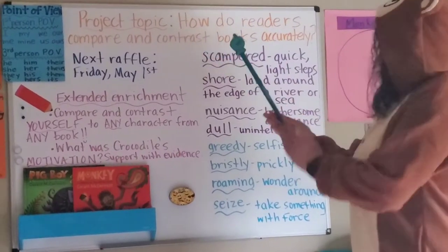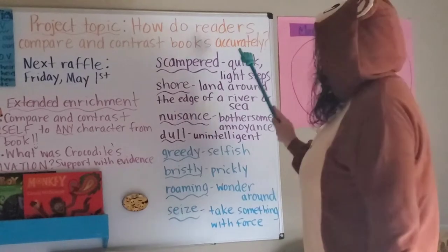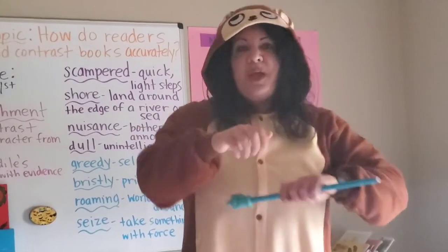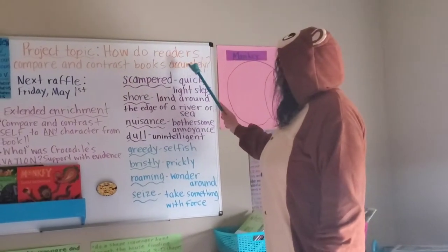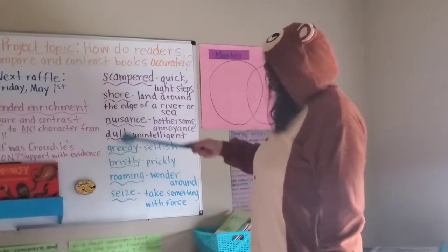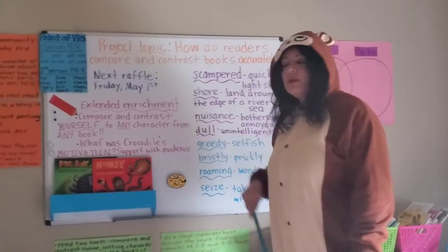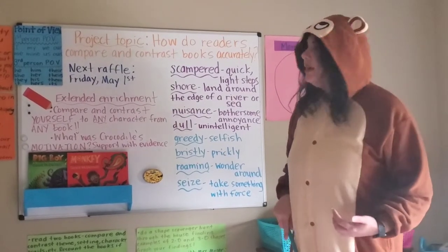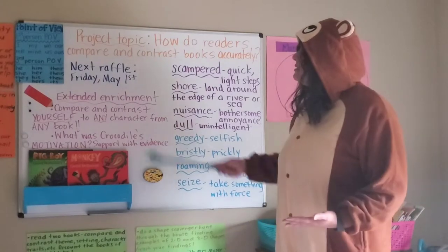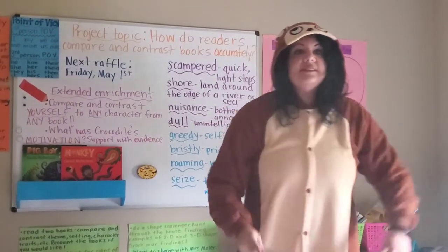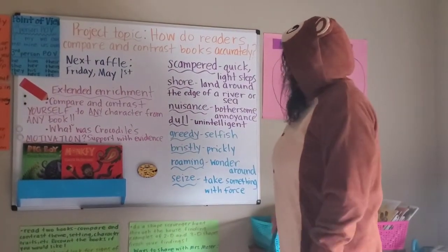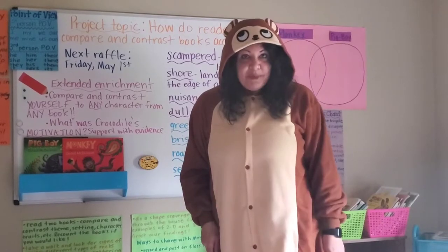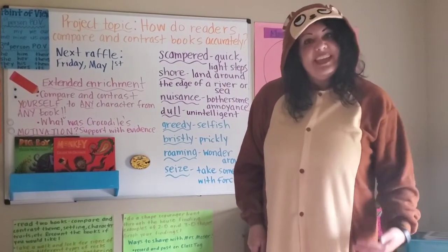How do readers compare and contrast books accurately? I see the suffix 'ly' — just like last week, 'ly' means in a certain way, like 'quickly.' We know that 'accurate' means correct, so 'accurately' means in a correct way. And comparing and contrasting — thinking about our mentor sentences — on Tuesdays we compare and contrast using Venn diagrams with sentences, but today we're going to be doing it with books. So comparing and contrasting two things that are alike and different. We're going to read two trickster tales today: Mrs. Moser is going to read aloud Monkey and also Pig Boy. Then you'll be able to compare and contrast and send it to me.